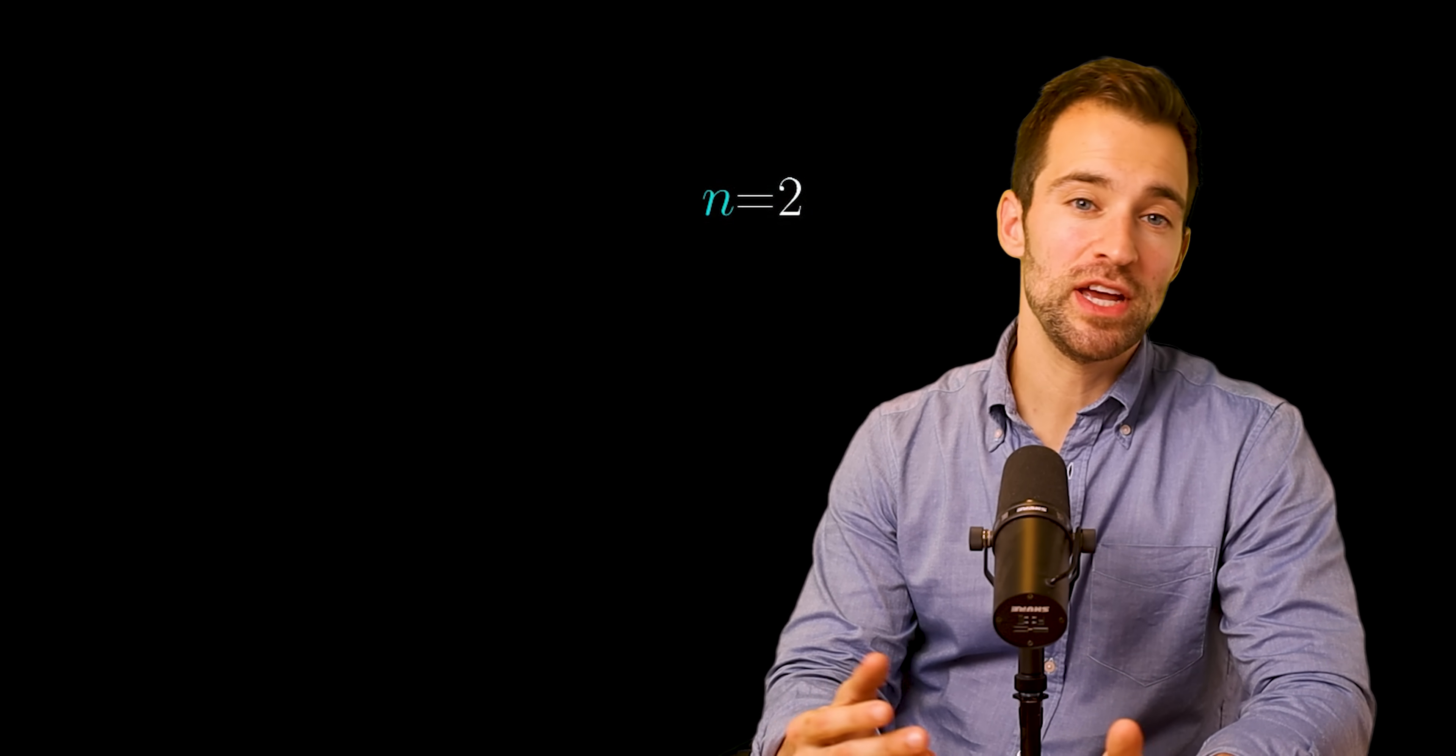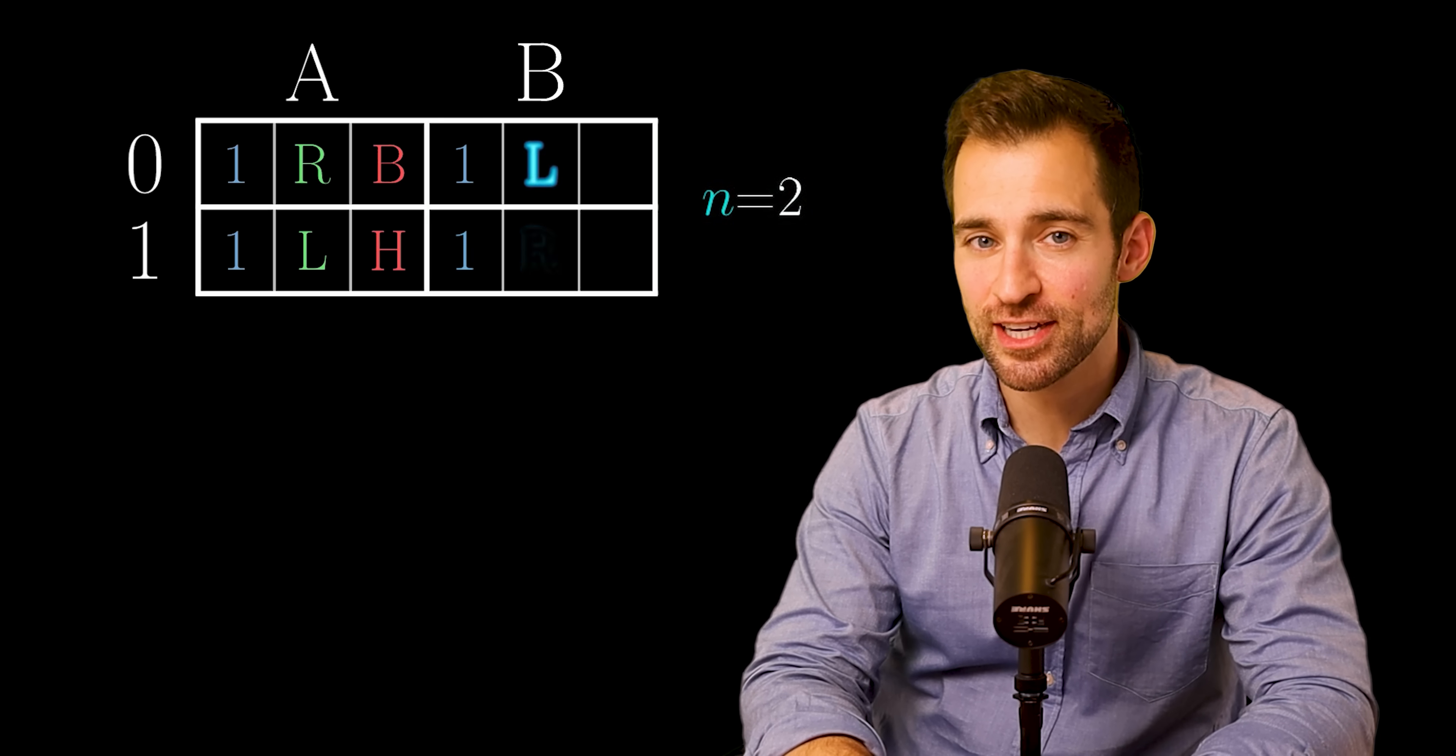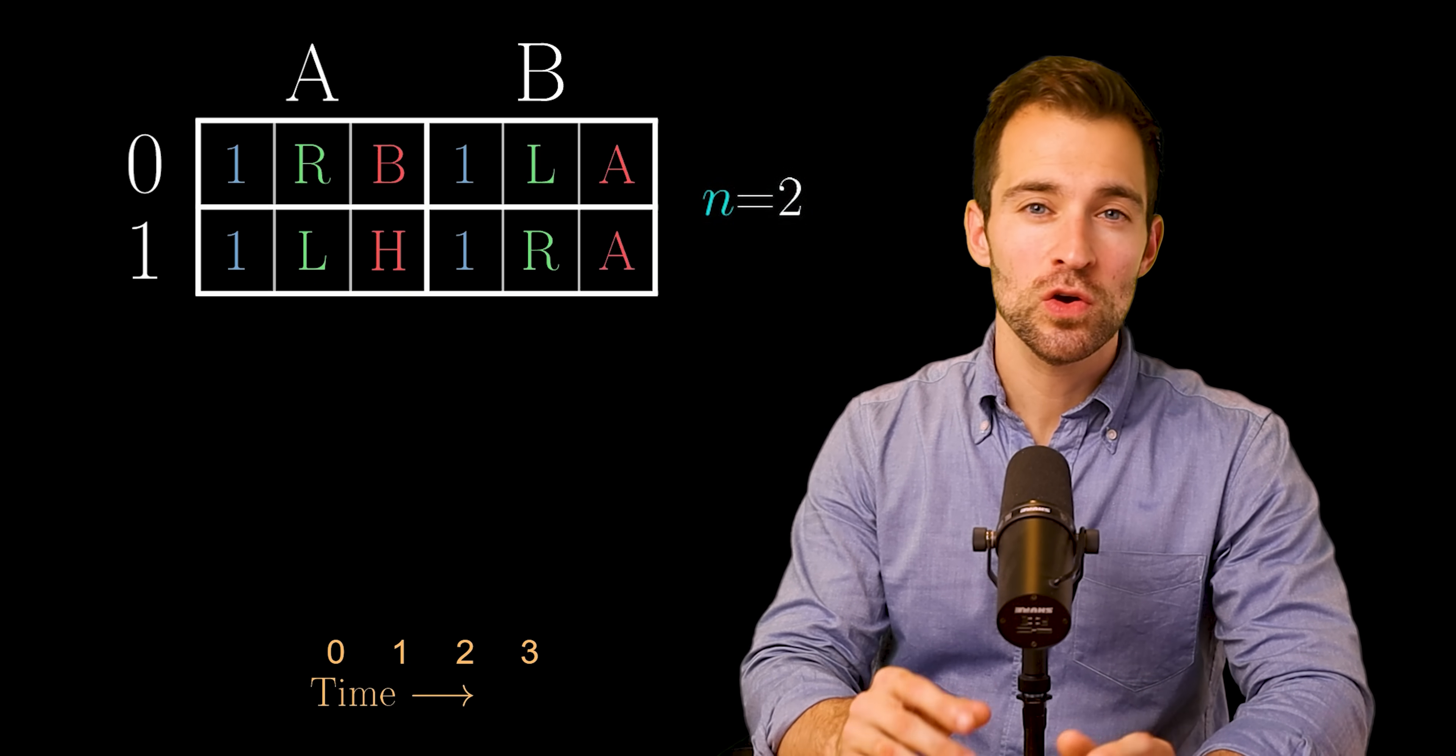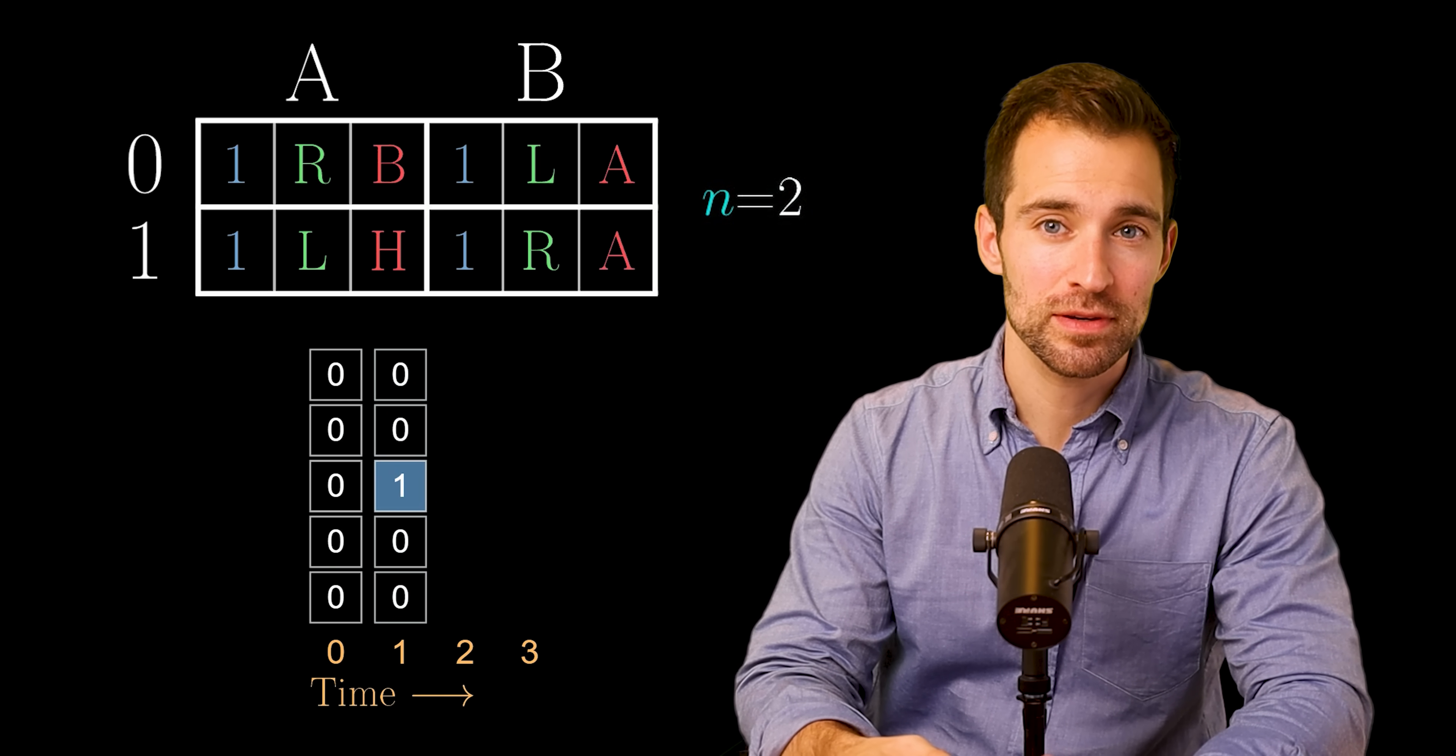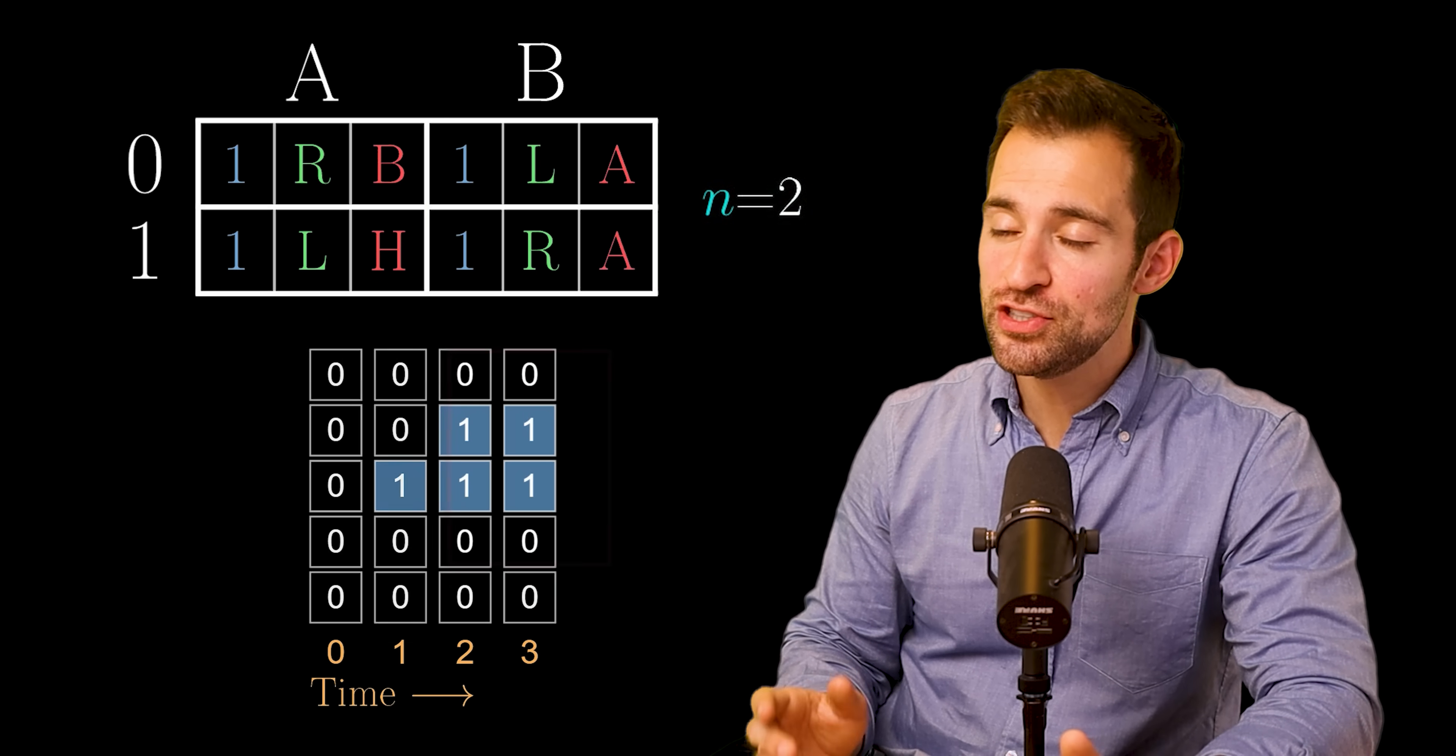Let's do an example. Let's say n equals two. So, we have a two state table to consider. I'll start by just making up the machine's actions. Now, to see what the machine does, we'll show the tape after each operation. We start with all zeros, and then after a write, shift, and state transition, we have the next tape. And this continues. As we can see, we've written two ones.